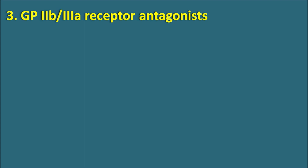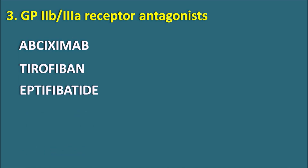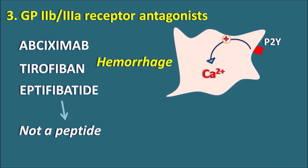The third category of drugs is GP2B/3A receptor antagonists. Drugs include abciximab — the suffix '-mab' indicates it is a monoclonal antibody — as well as tirofiban and eptifibatide. All these drugs act on GP2B/3A receptors as antagonists. These receptors are responsible for platelet aggregation through the fibrin network, and when antagonized they prevent platelet aggregation. Because they inhibit platelet aggregation, these drugs produce hemorrhage as an important side effect.